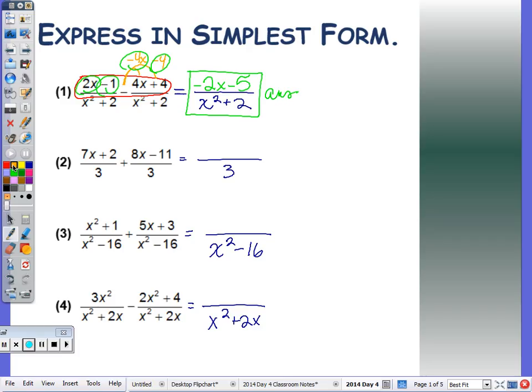Number 2, when I combine the numerator with a plus, I don't really have to worry about distributing the sign all the way through as the signs remain the same. So 7x and 8x is 15x. 2 minus 11, or 2 plus negative 11, is negative 9.